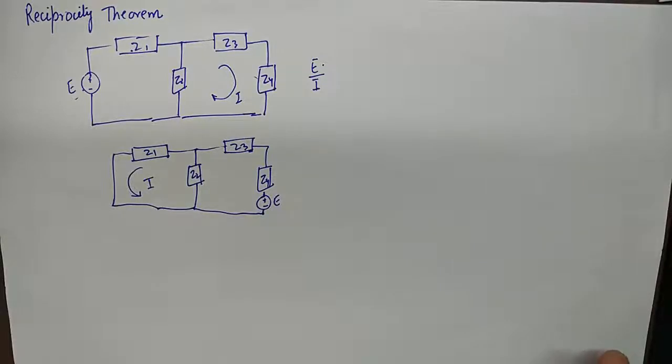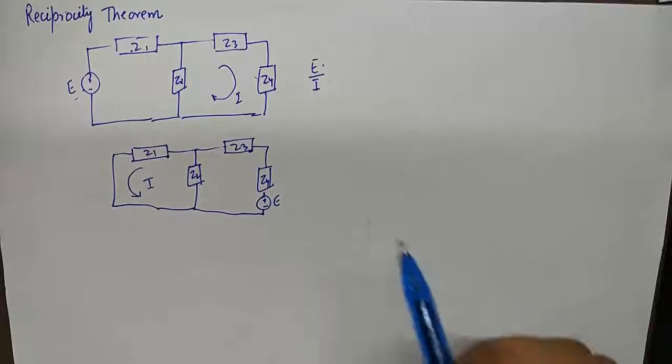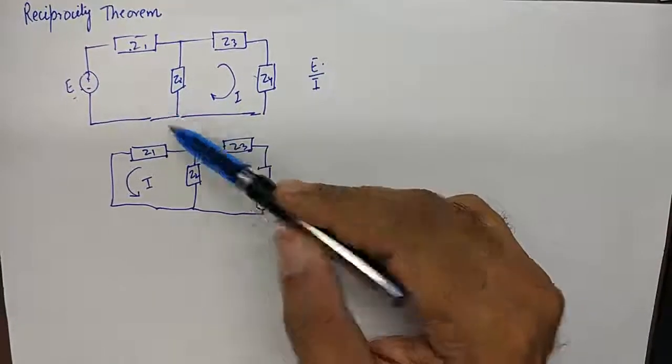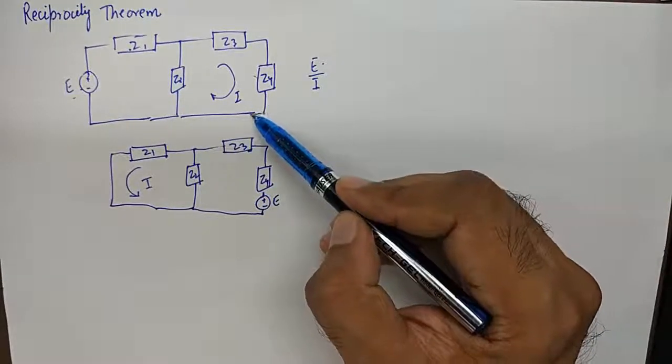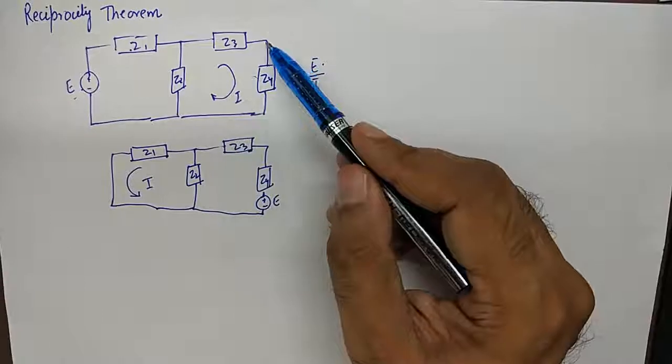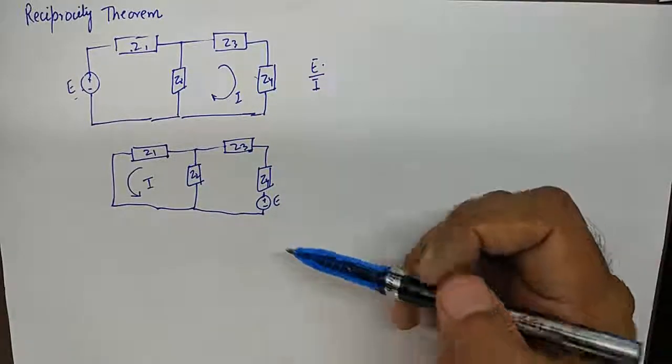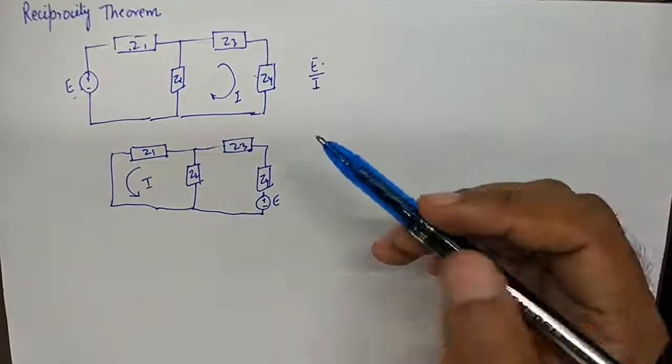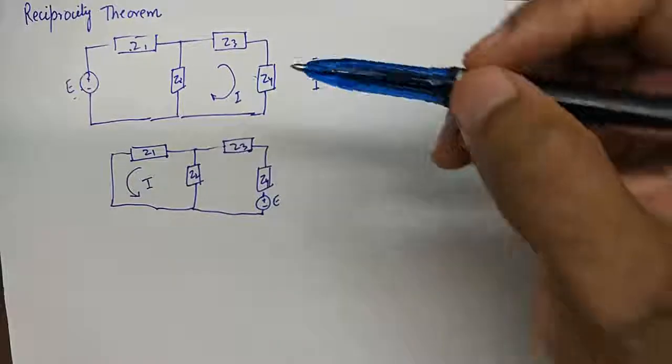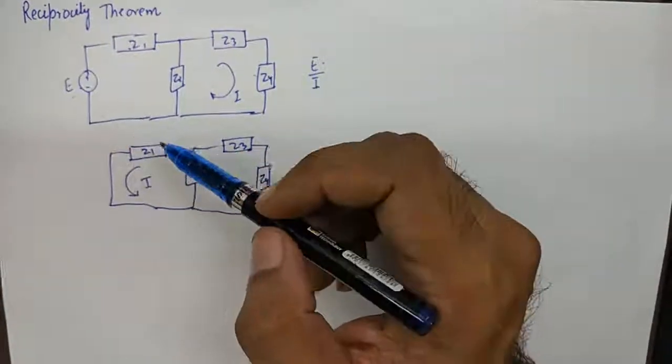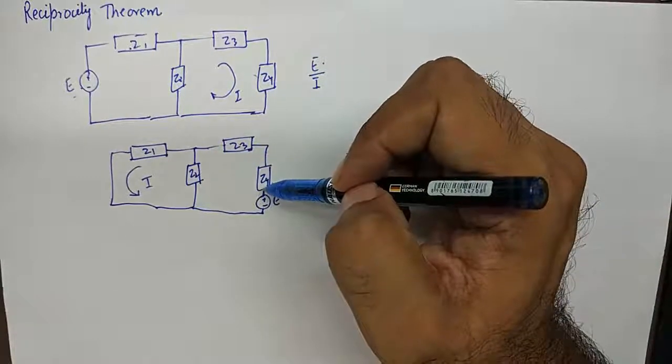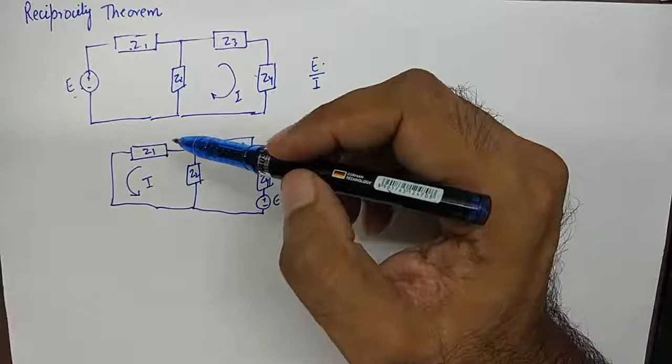So according to the statement, the positions of V and I are interchanged in the network. So by interchanged in the positions of V and I, we mean pictorially like this. So in this network, the current which was flowing in this branch, particularly in this branch, we have placed E. This E could have been placed here or here or here, it doesn't matter, but it has to be placed in the same branch where the current was being monitored, and the position of voltage source is changed.